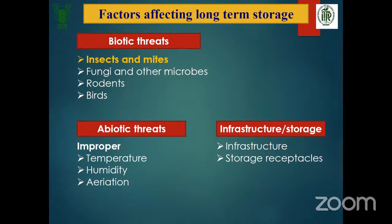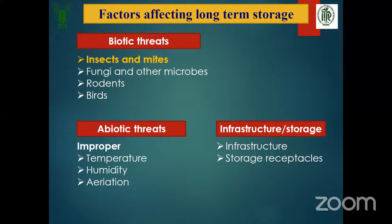Coming to factors affecting long-term storage — this is a possible exam question. You can organize your answer under three sub-headings. First, biotic threats include insects and mites infesting stored products, fungal organisms, other microbes, rodent species, and birds that enter storage structures if roofs or storage structures are improperly maintained.